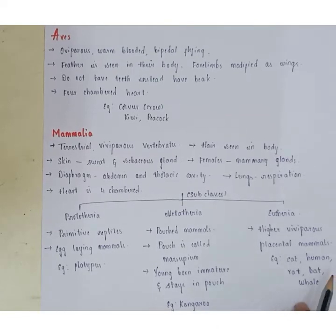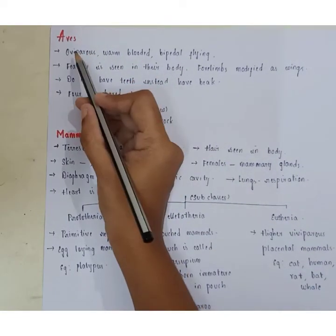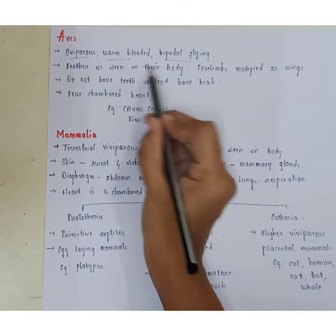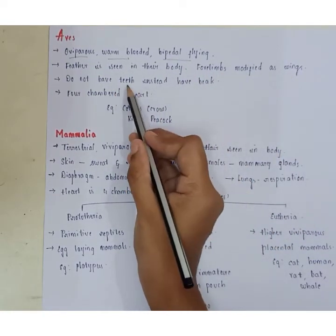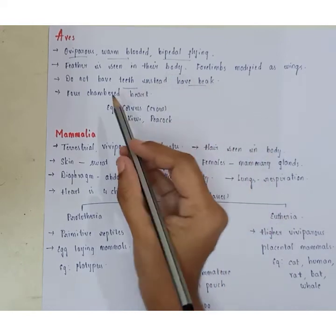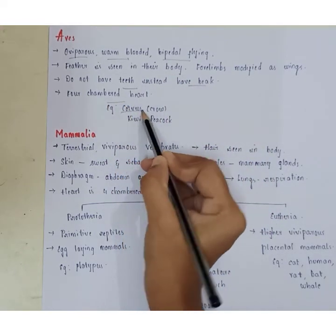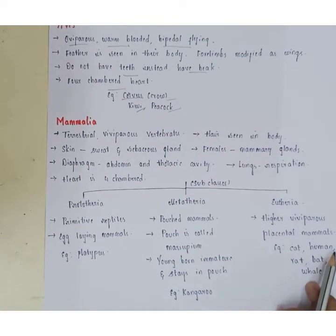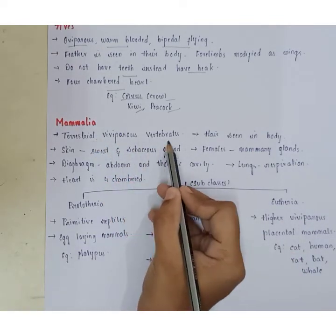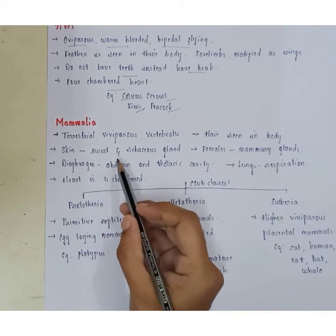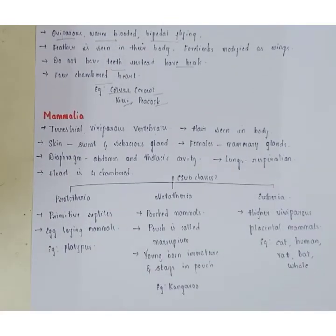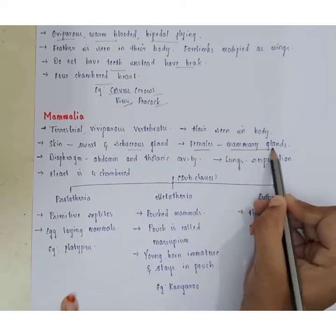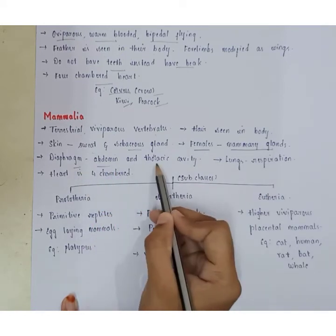Class Aves are oviparous, warm-blooded, and bipedal. Feathers are seen on the body, forelimbs are modified as wings, and they possess a beak instead of teeth. The heart is four-chambered. Examples include Corvus (crow), kiwi, and peacock. Class Mammalia are terrestrial viviparous vertebrates. Hair is seen on the body, and the skin contains sweat and sebaceous glands. Females contain mammary glands and a diaphragm is present between the abdomen and thoracic cavity.